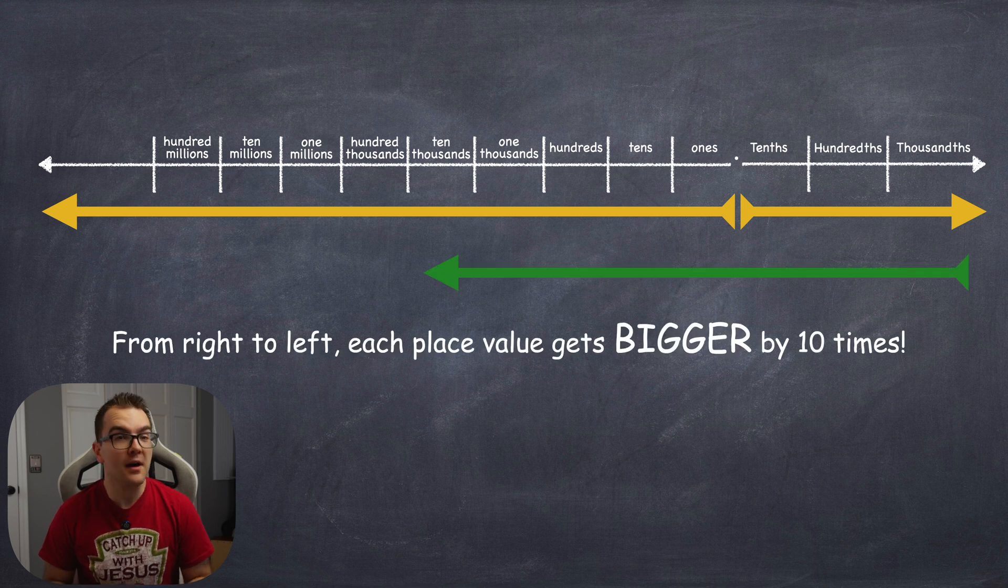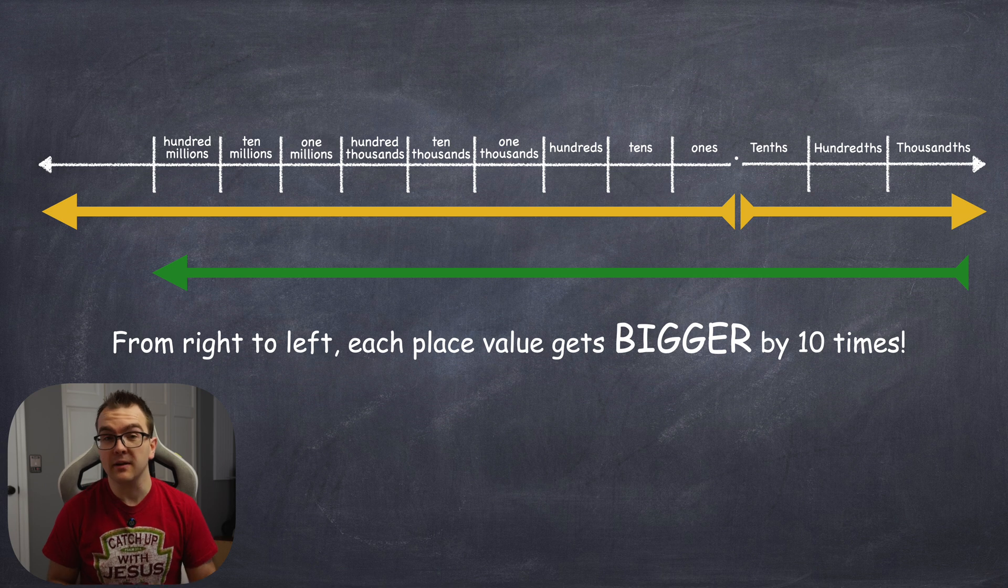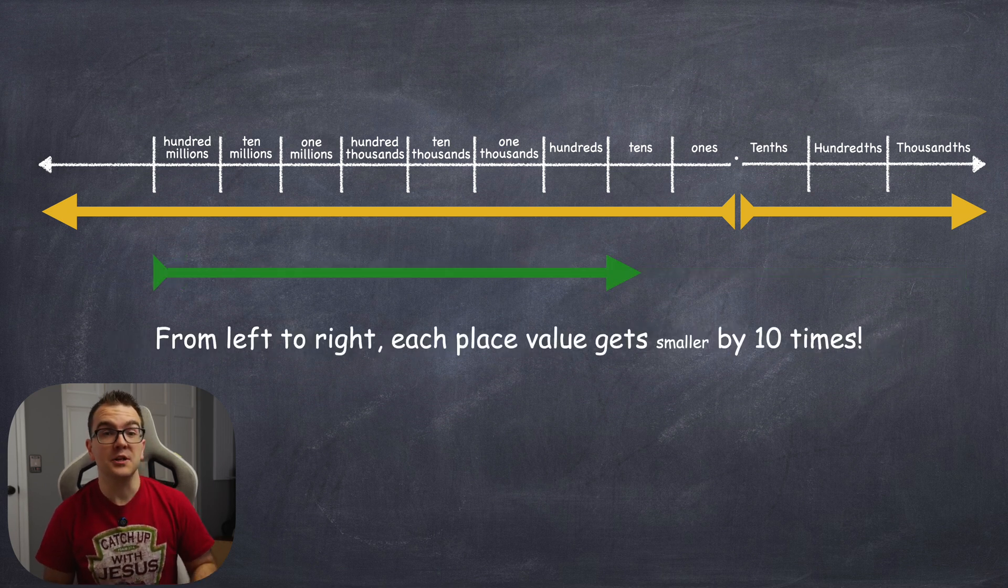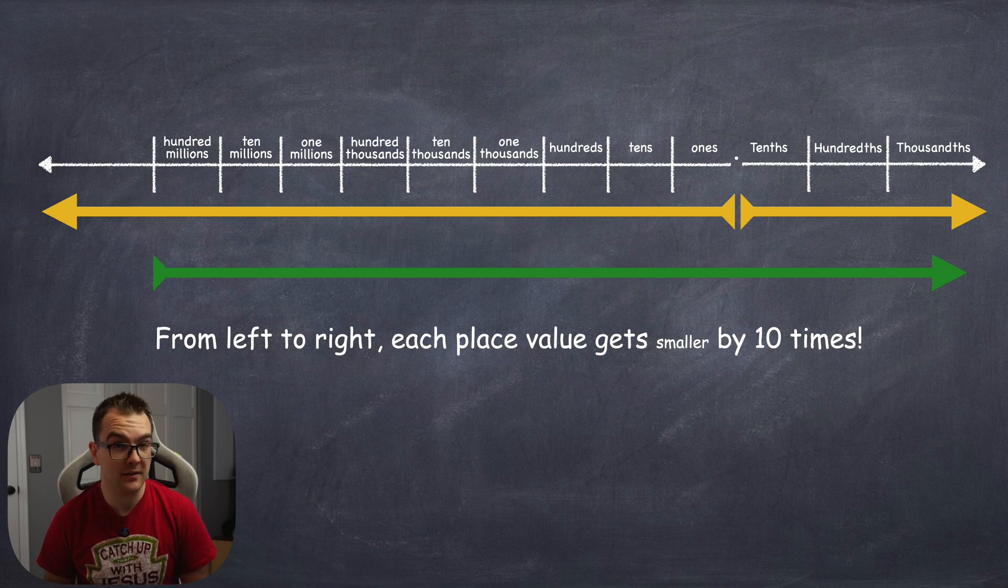And no matter where we are on our place value, when we move from right to left, each place gets bigger by 10 times. And as we move from left to right, each place gets smaller by 10 times.